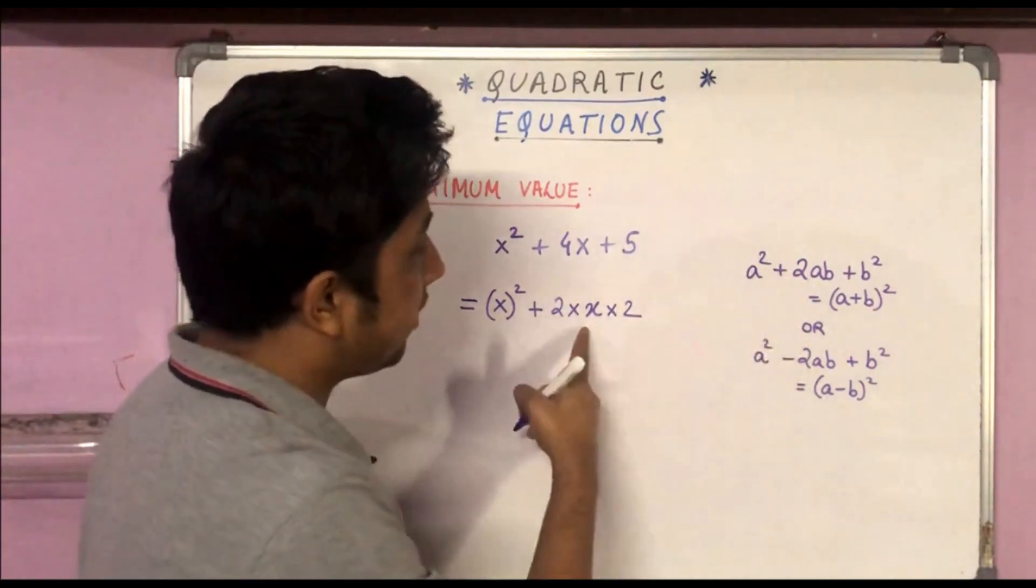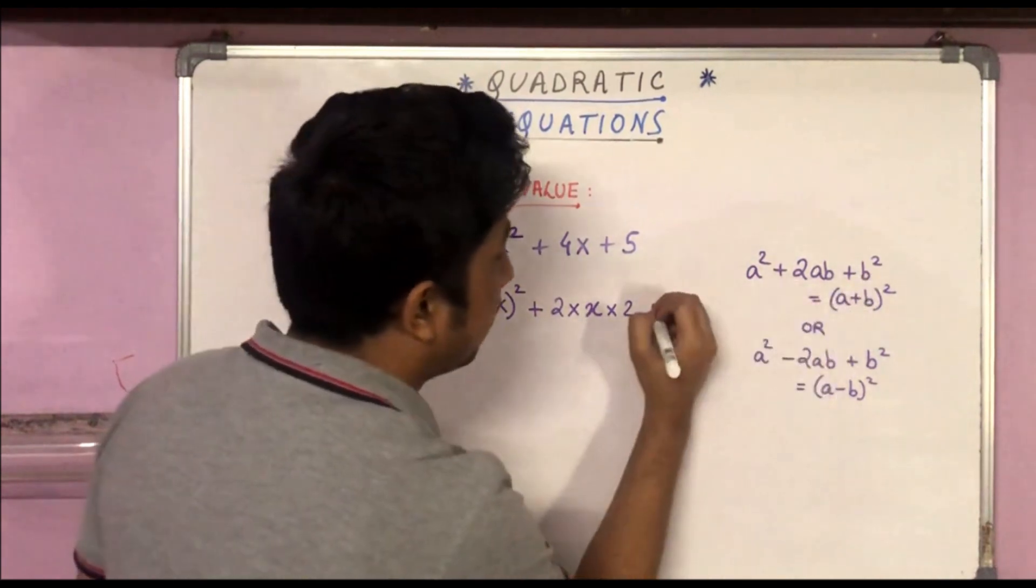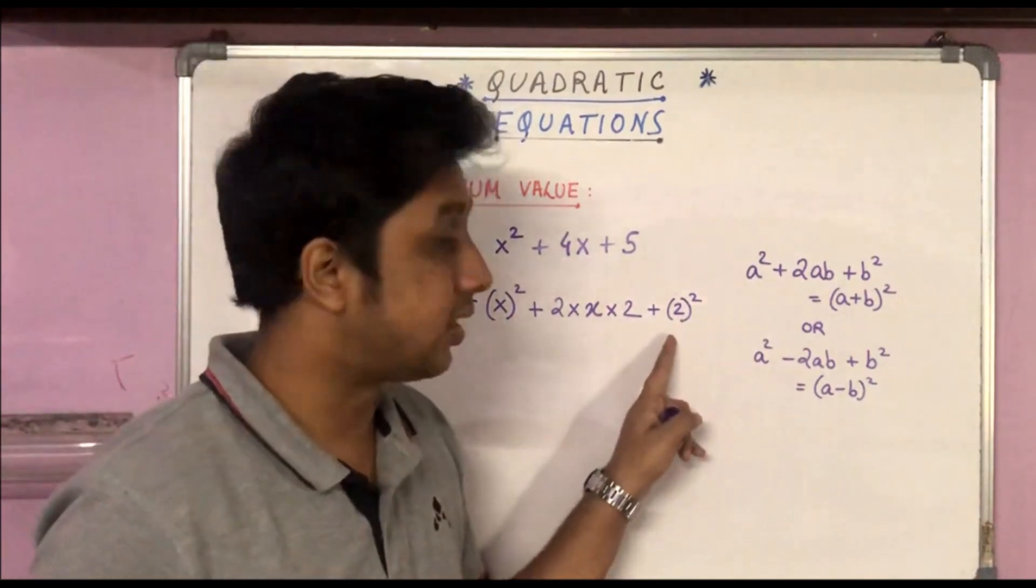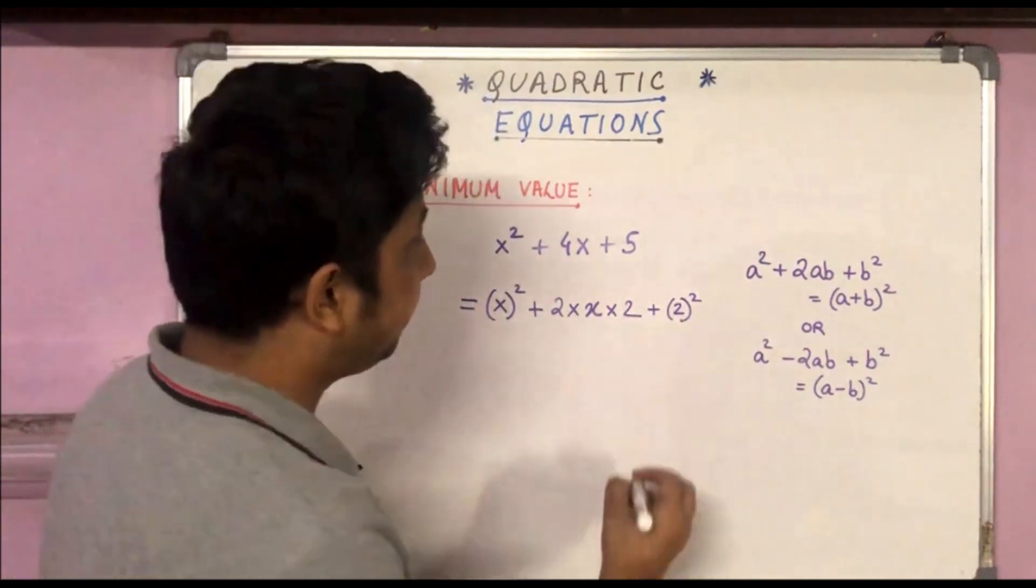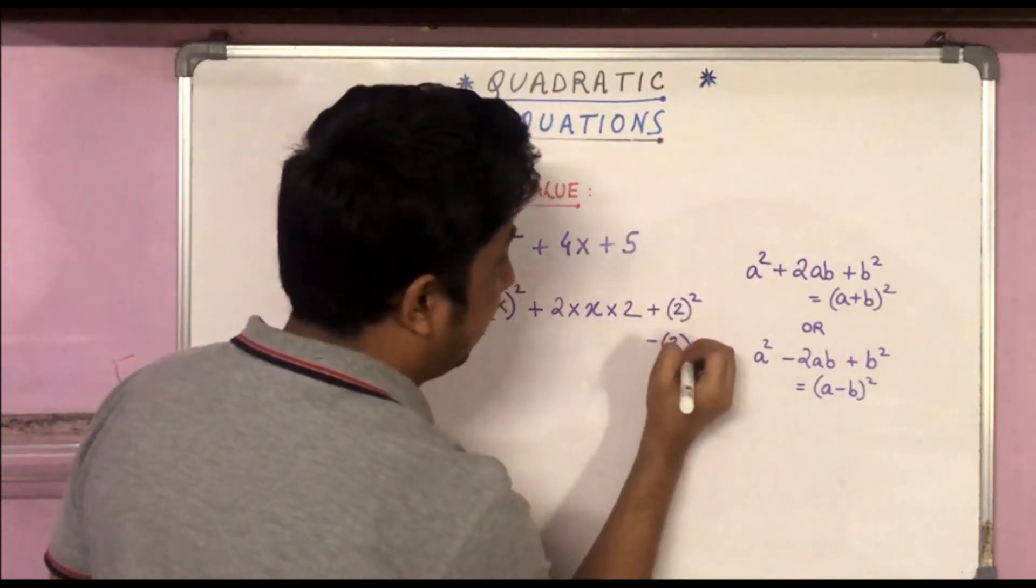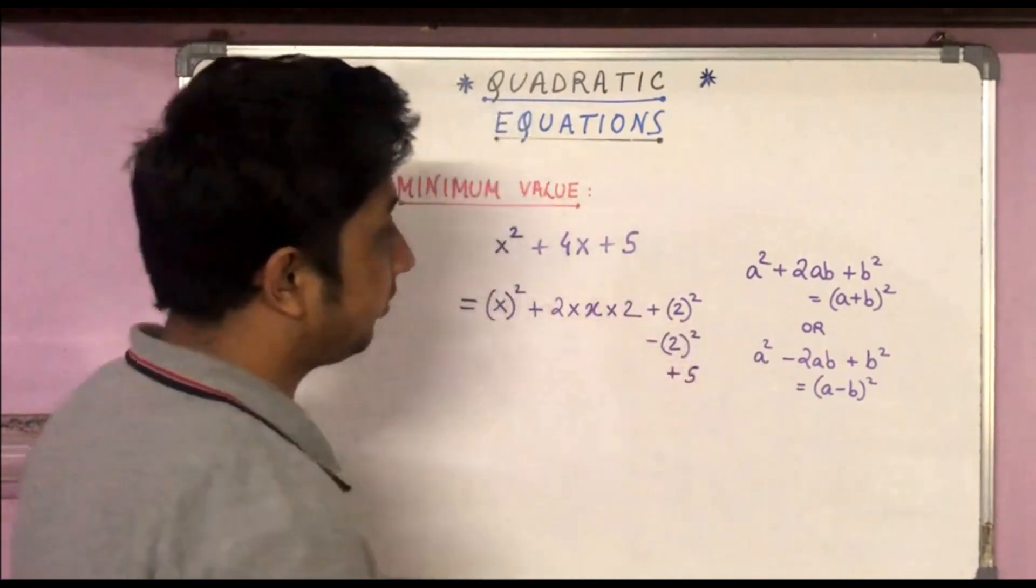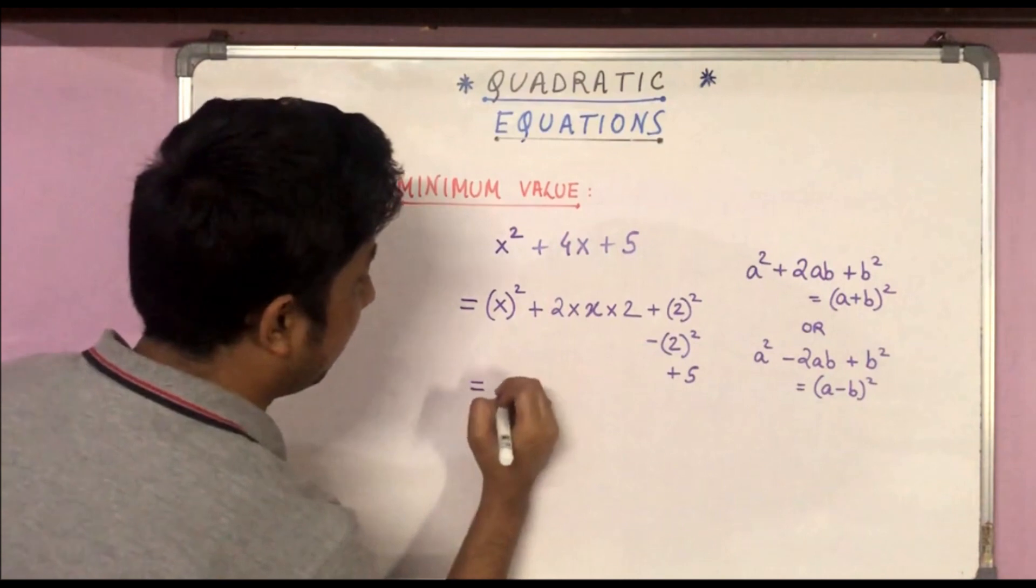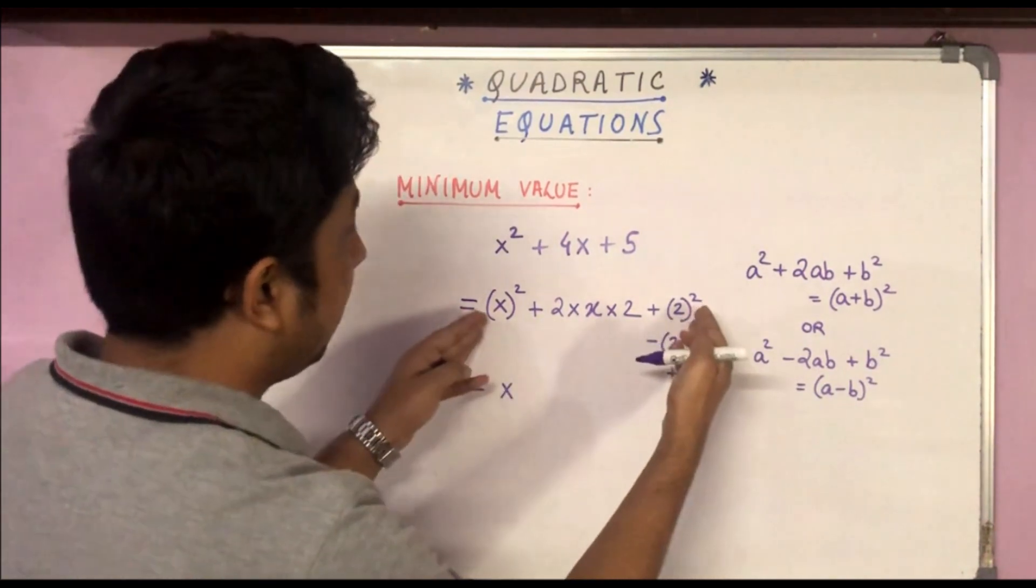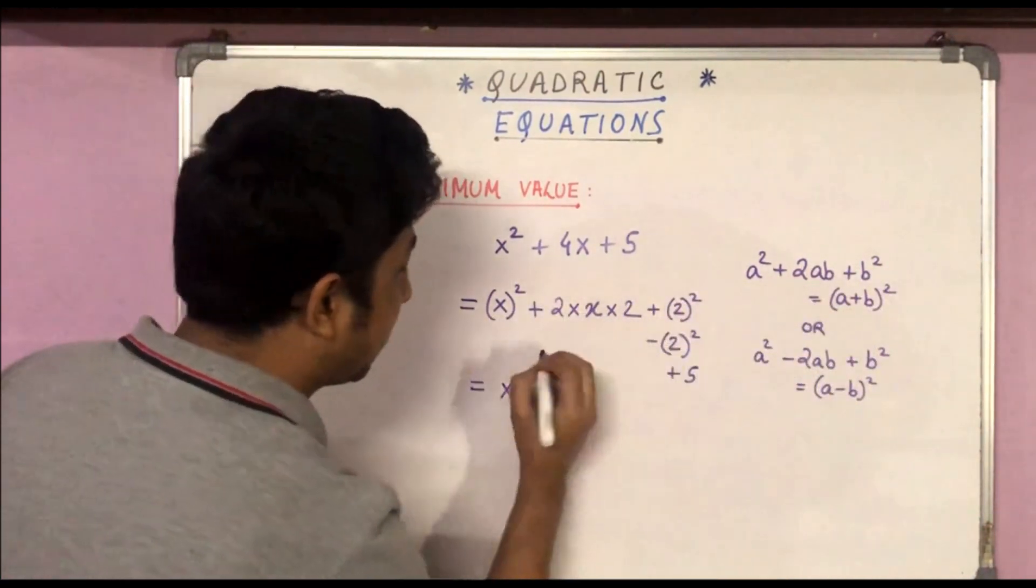If we compare it with this, then the value of b becomes 2 and we need b², so plus 2². We have (x + 2)² and since we didn't have +2² in the beginning, we need to subtract 2². Now this is exactly of this form, so it will come out to be (a + b)² - that is (x + 2)² - 4 + 5, which equals (x + 2)² + 1.